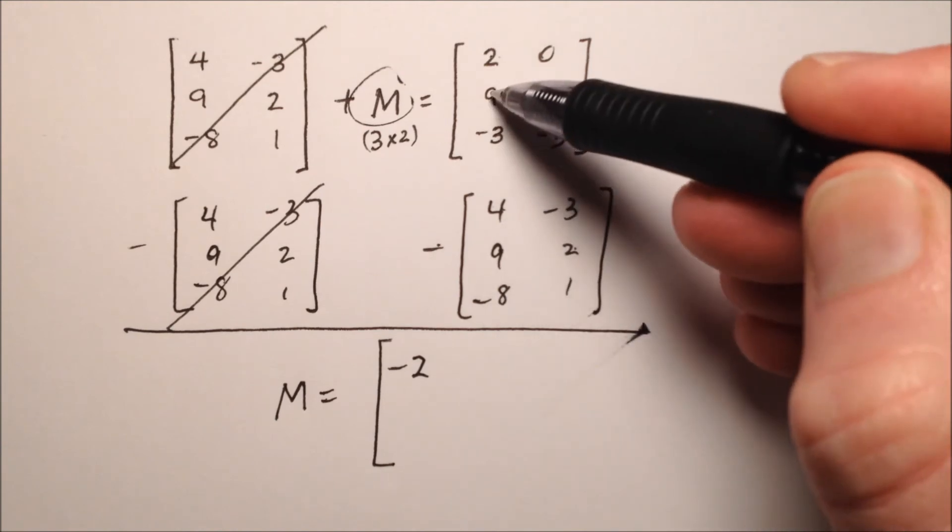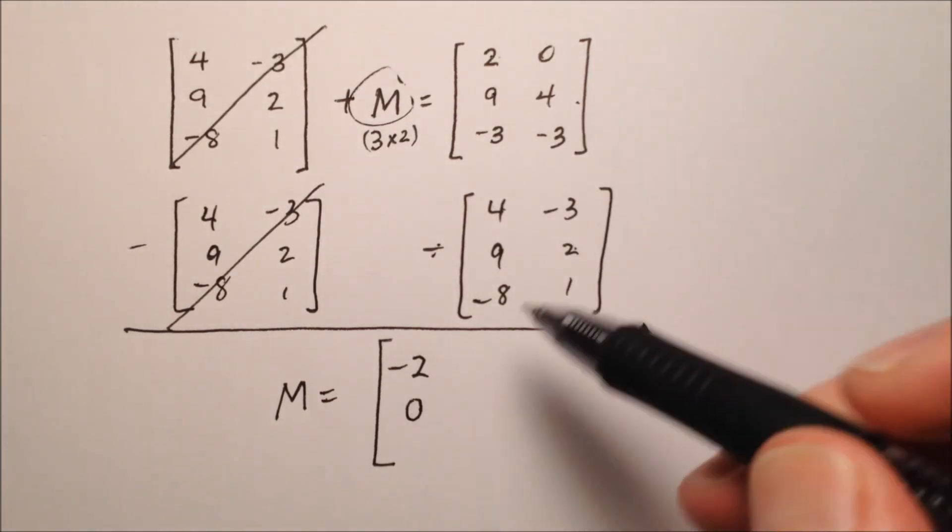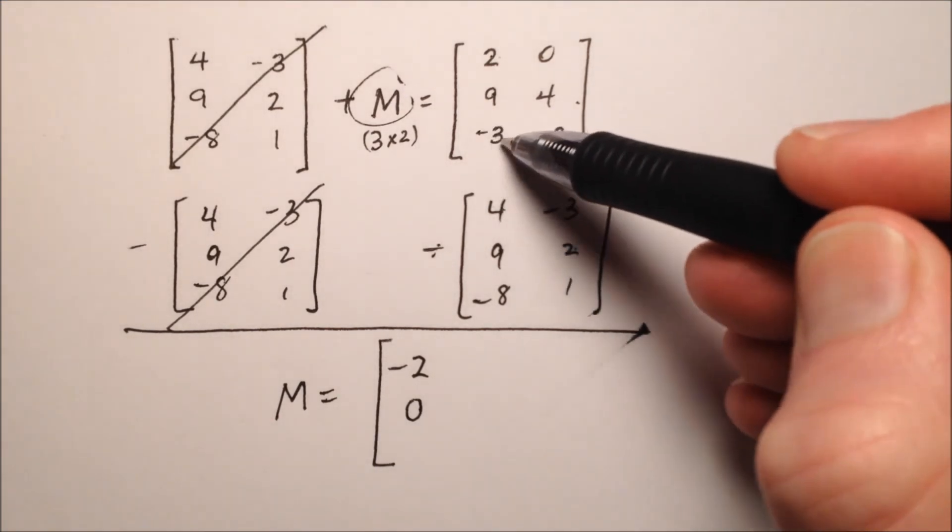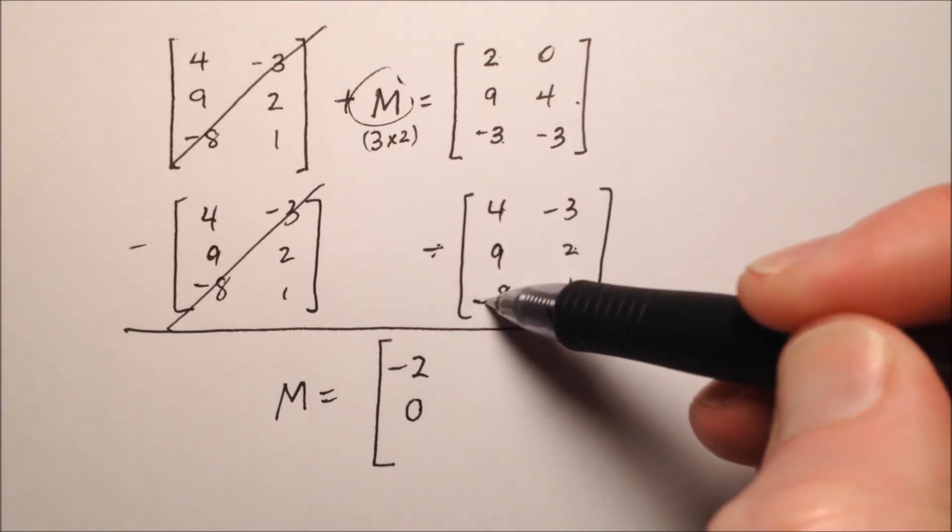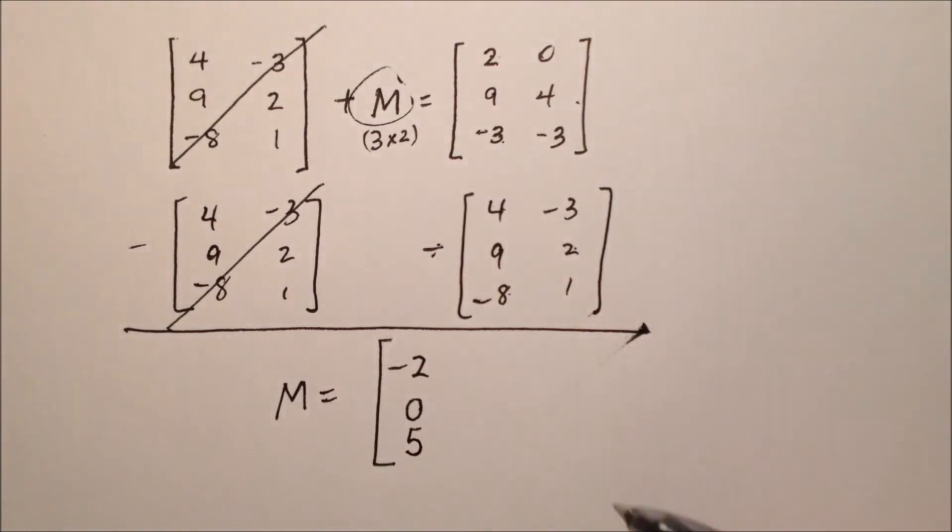So let's work our way down. So 9 minus 9, that's going to be 0, row 2, column 1. Negative 3 minus a negative 8 is going to be the same as negative 3 plus 8, so that will be 5.